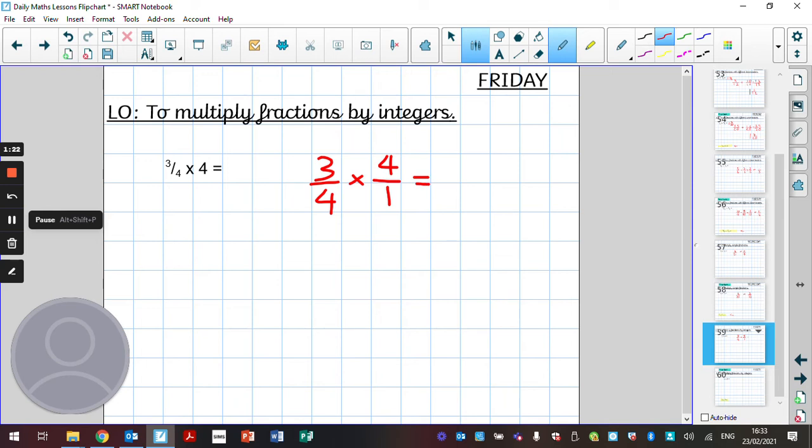Now what we've rewritten it out as a simple fraction, we can now do exactly the same as what we did yesterday, multiplying those simple fractions. Three multiplied by four is twelve. Four multiplied by one is four.